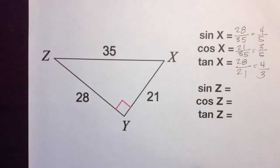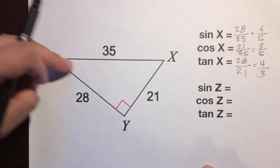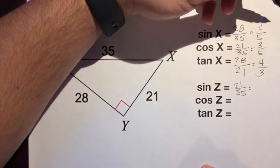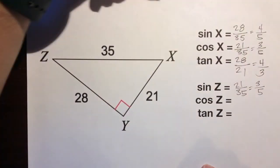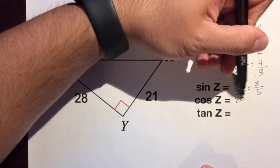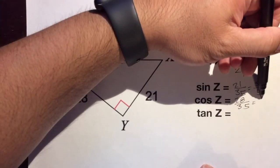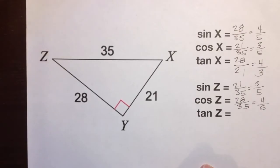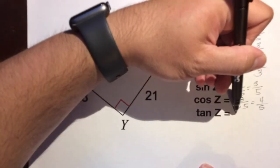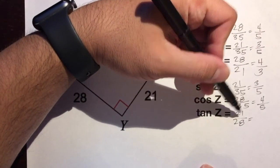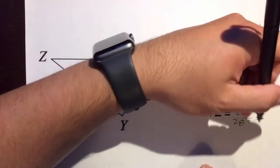And the last three — let's finish strong. Sine of Z: opposite over hypotenuse — 21 over 35. Divide by 7: 3 over 5. Cosine of Z: adjacent over hypotenuse — 28 over 35. Divide by 7: 4 over 5. And the very last one — tangent of Z: opposite over adjacent — 21 over 28. Divide by 7: 21 divided by 7 is 3, 28 divided by 7 is 4. So tangent of Z equals 3 over 4.